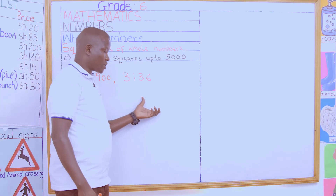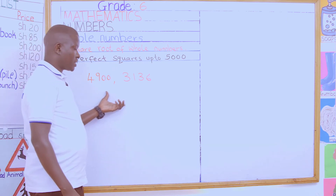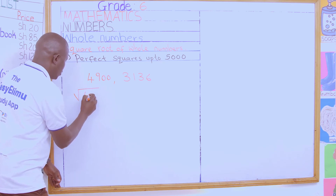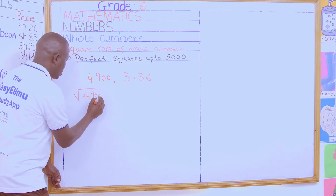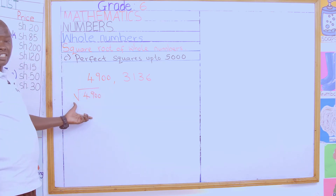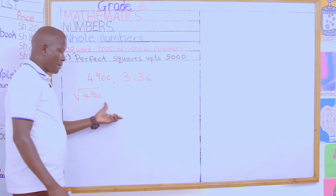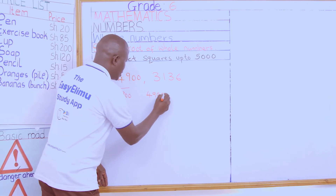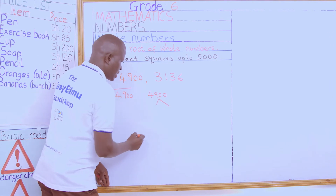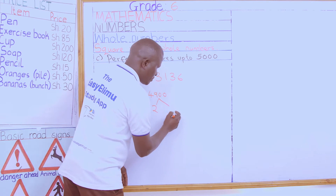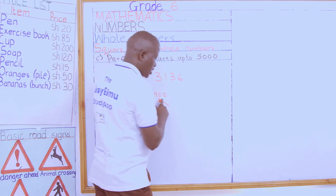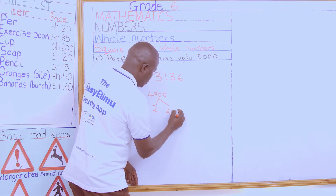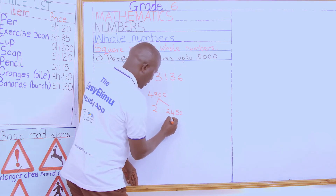Using these two numbers, let us now work out their square roots. We start with the first one: what is the square root of 4,900? Using the factor tree or the factor method, we pick 4,900 and disintegrate it. When you divide 4,900 by two you get 2,450.